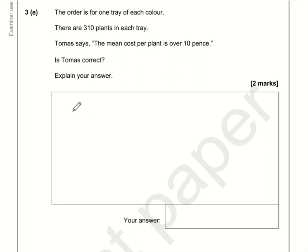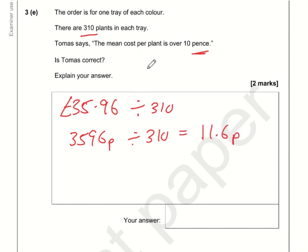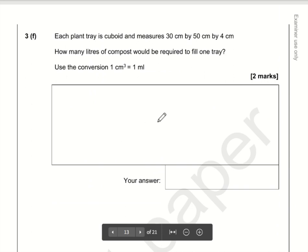From the previous question, a tray costs £35.96, and there are 310 plants per tray. To find the cost per plant, we divide 35.96 by 310. Since we want the answer in pence, it's better to convert to 3,596 pence divided by 310, which comes to approximately 11.6 pence. Thomas claims the mean cost per plant is over 10 pence — 11.6 pence is greater than 10 pence, so yes, Thomas is correct.